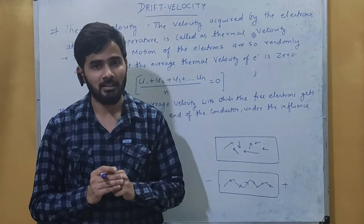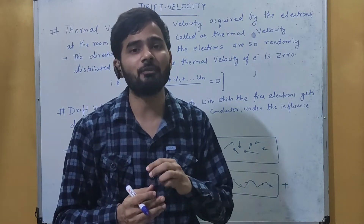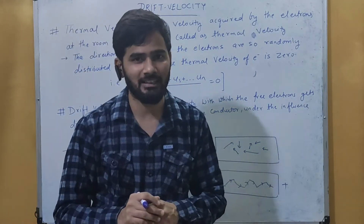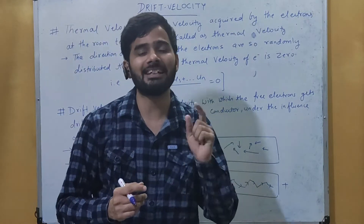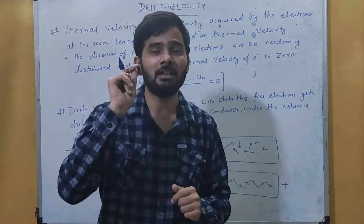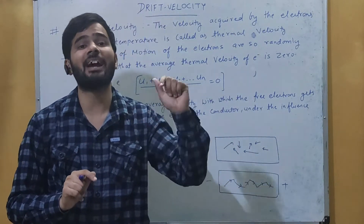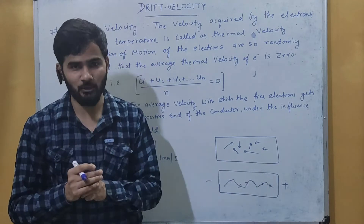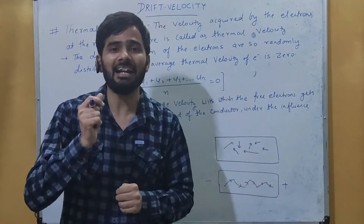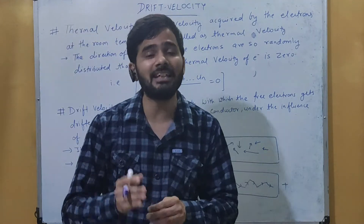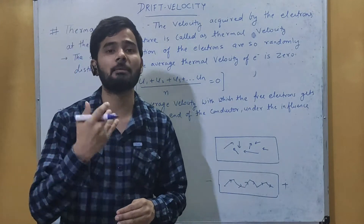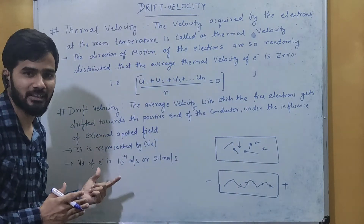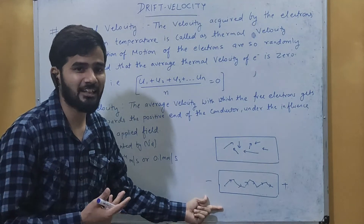This means an electron travels only 0.1 mm in one second inside a conductor. But you might have heard that current flows because of electron movement — so if electrons move at only 0.1 mm/s, how does a fan switch on instantly when we flip the switch? The answer is: when energy is provided to one electron, it transfers energy to the next electron. So energy flows from one point to another in the conductor at the same speed as light, which is why devices start working instantly when we switch them on.